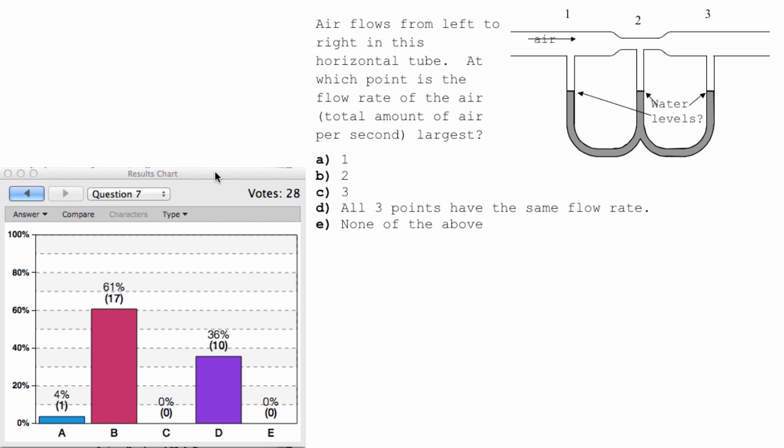The flow rate of the air is also called the current. Amount of stuff, the volume per second is called the current. I call it the flow rate here, I call it the current earlier, those are the same thing.